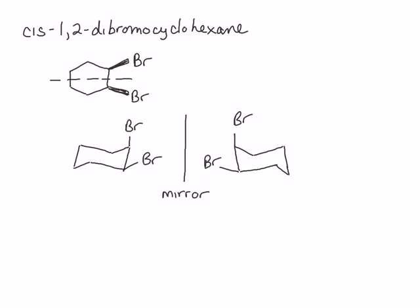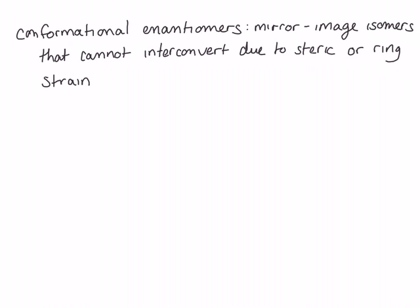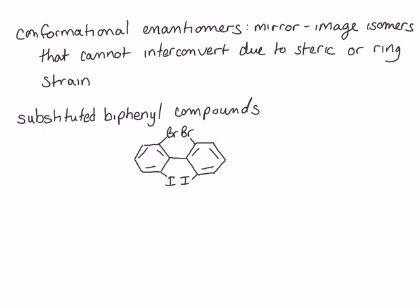Now let's look at some molecules that don't have chiral centers but are still chiral. There are two main classes of such molecules. The first of these are called conformational enantiomers — mirror image isomers that cannot interconvert due to steric or ring strain. An example of a conformational enantiomer are substituted biphenyl rings. This compound cannot exist in the planar conformation because the bulky bromine groups and the bulky iodine groups would be bumping into each other's van der Waals radii.